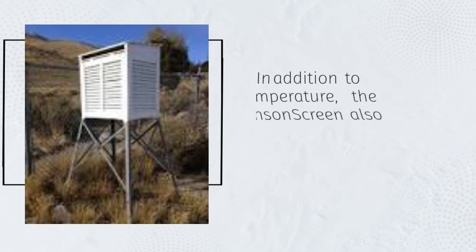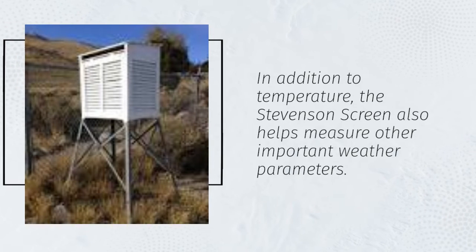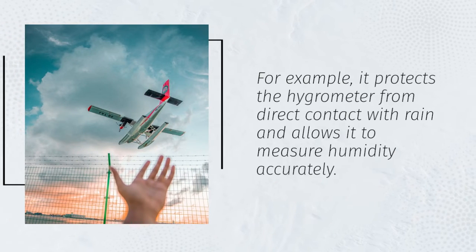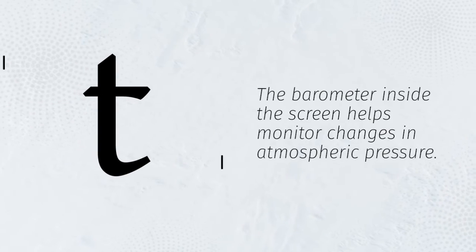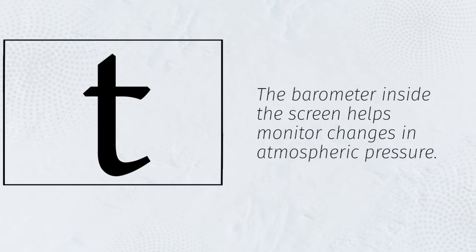In addition to temperature, the Stevenson screen also helps measure other important weather parameters. For example, it protects the hygrometer from direct contact with rain and allows it to measure humidity accurately. The barometer inside the screen helps monitor changes in atmospheric pressure.